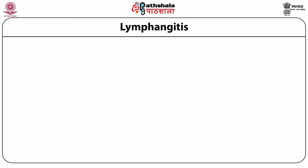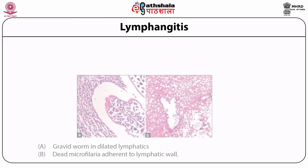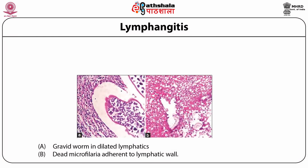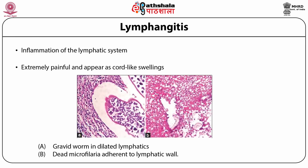The first disease caused by Wuchereria bancrofti is called lymphangitis. Adults and larvae of Wuchereria bancrofti are present in the lymphatics of human beings. You can observe the worms present in lymphatics and dead microfilariae attached to the lymphatic wall. Their presence in the lymphatic channels results in inflammation of the lymphatic system. The inflamed areas are extremely painful and appear as cord-like swellings. This is called lymphangitis.